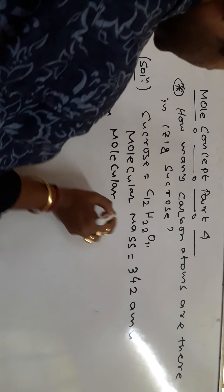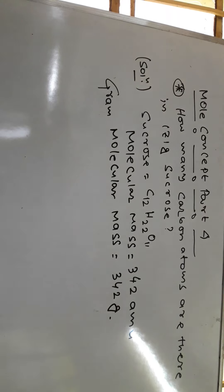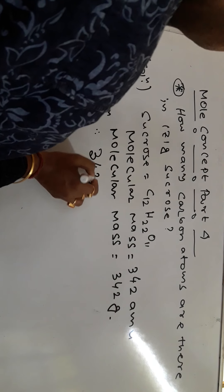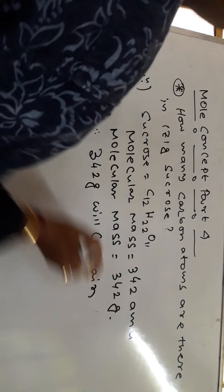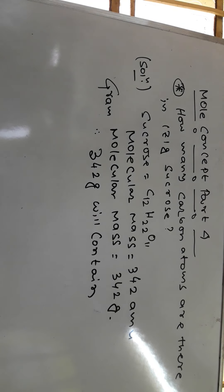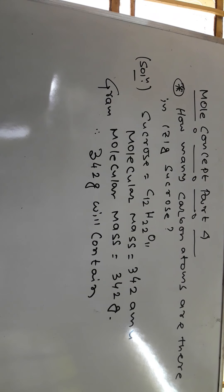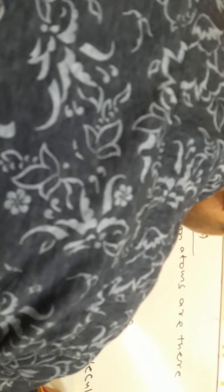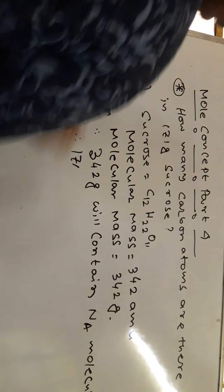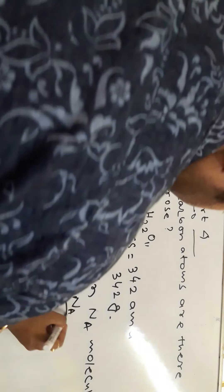The gram molecular mass will be 342 grams. Now, 342 grams will contain Avogadro's number (NA) of molecules — that is the gram molecular mass, which always contains NA molecules. So 171 grams is just half of 342, and therefore it will contain NA/2 molecules.